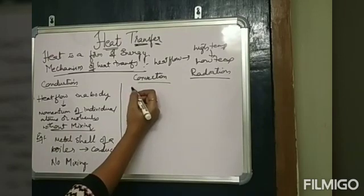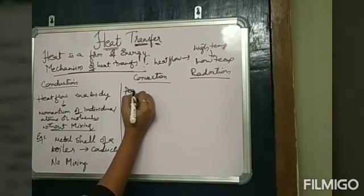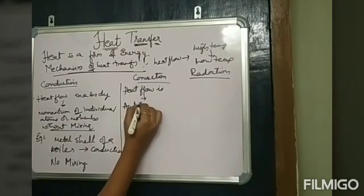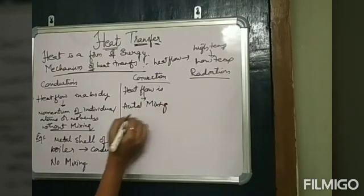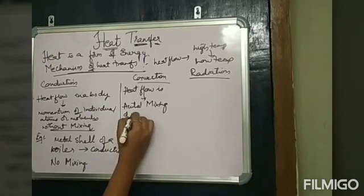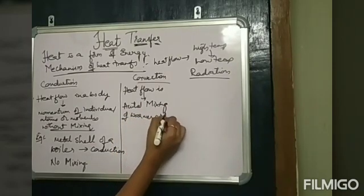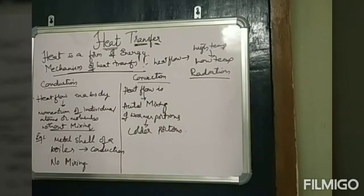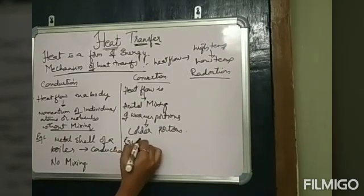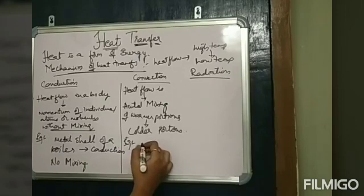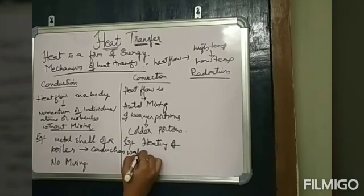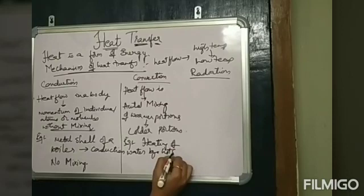Convection means heat flow is achieved by actual mixing of warmer portions to colder portions of the same material. Examples include heating of water by a hot surface, and natural phenomena like winds and sea breezes.